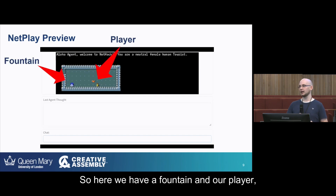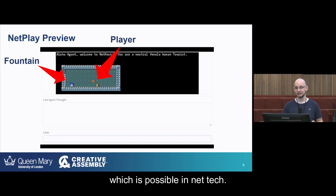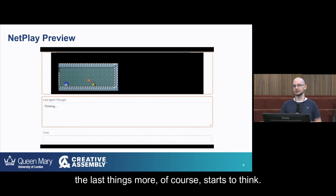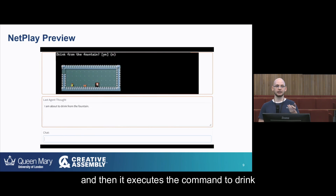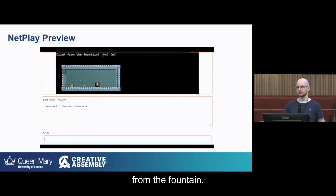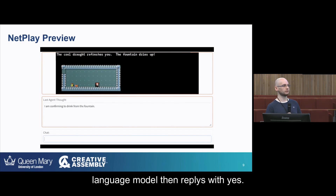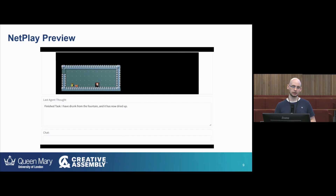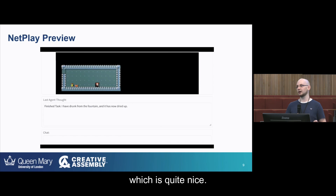Here we have a fountain and our player, and I'm going to ask it to please drink from the fountain, which is possible in NetHack. The large language model starts to think. First it walks to the fountain, then executes the command to drink, which prompts the game to ask 'are you sure you want to drink?' — which the language model replies to with yes. Finally, the language model also tells us it's done with the task. So not only does the language model play for us, but it also tells us when it's done, which is quite nice.